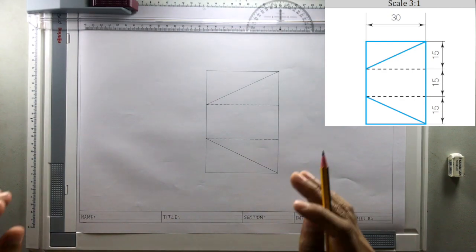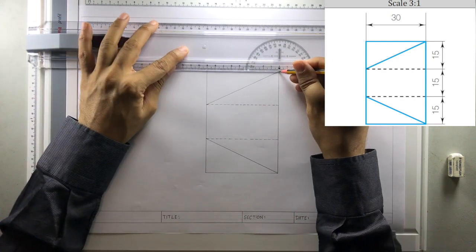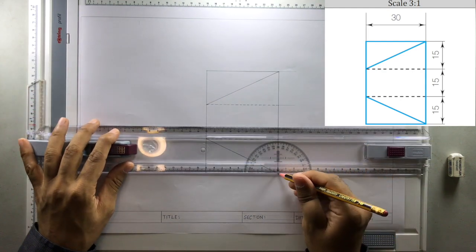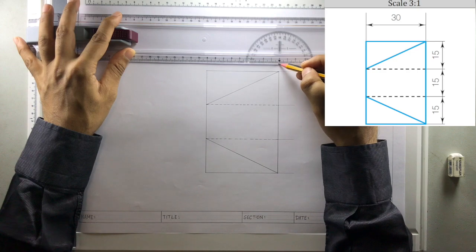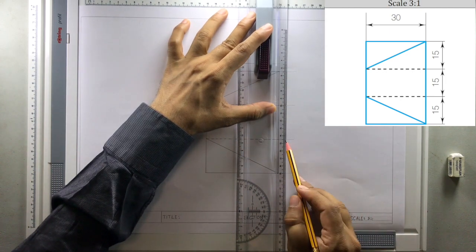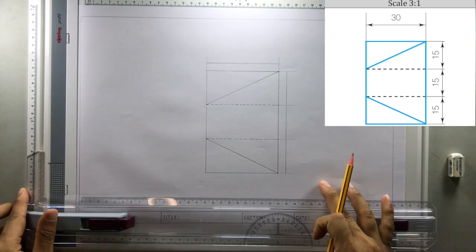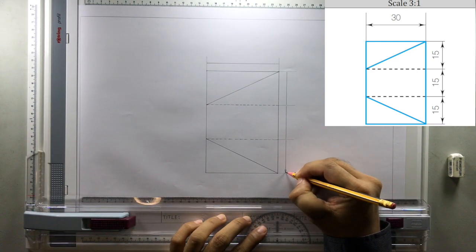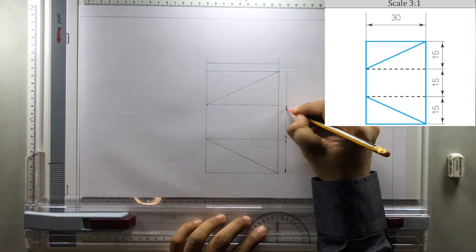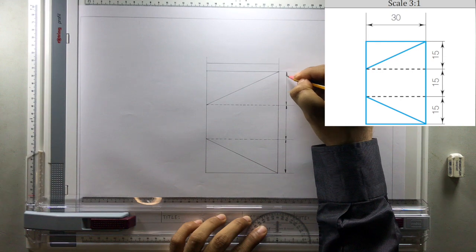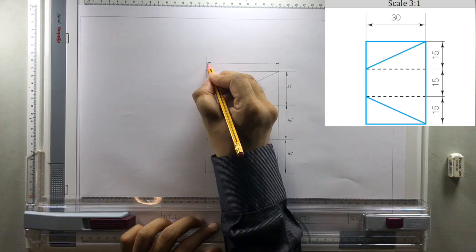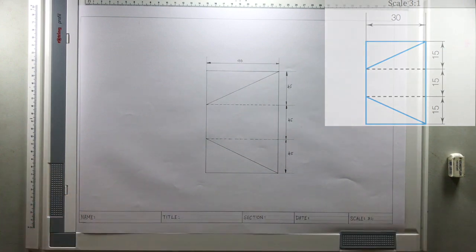Now, that's the entire drawing. After completing the drawings, do not forget to draw the extension lines and the dimension lines. So we draw it like this. Complete the arrows. Arrows have to be, arrowhead has to be pointed. That's it. Your drawing has been completed.